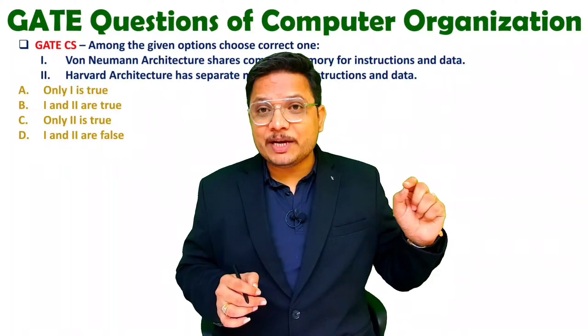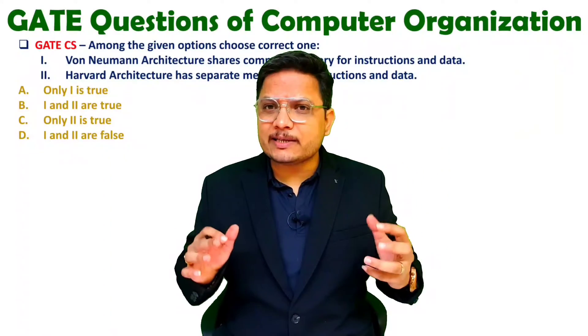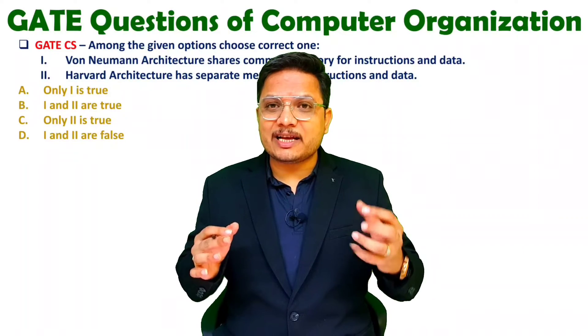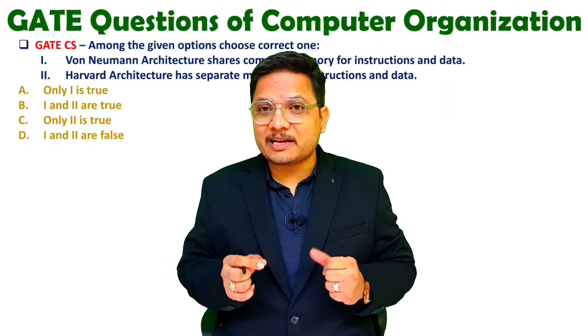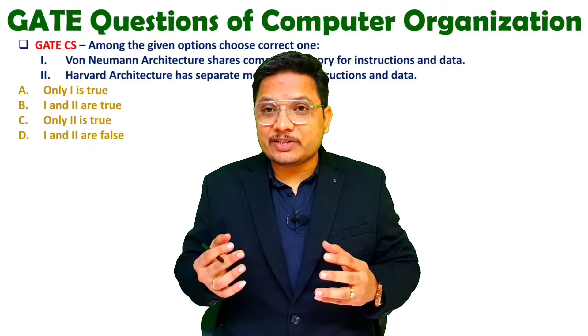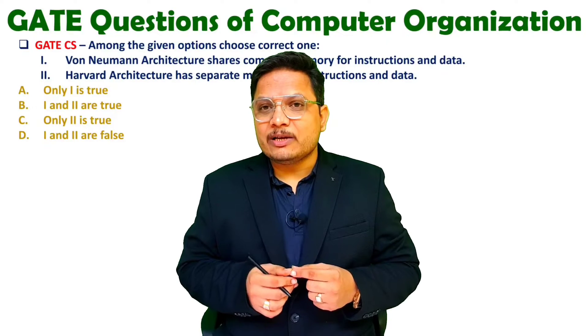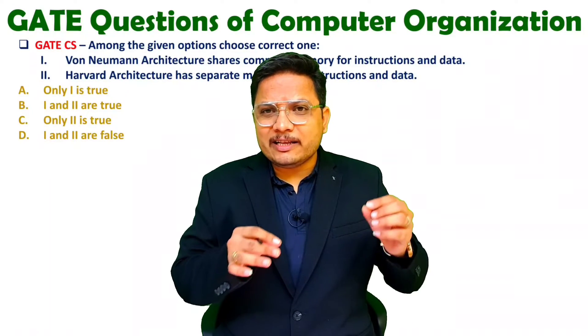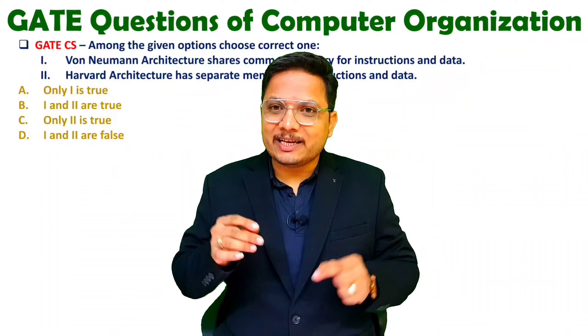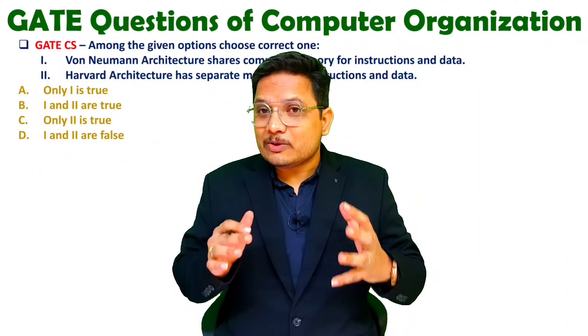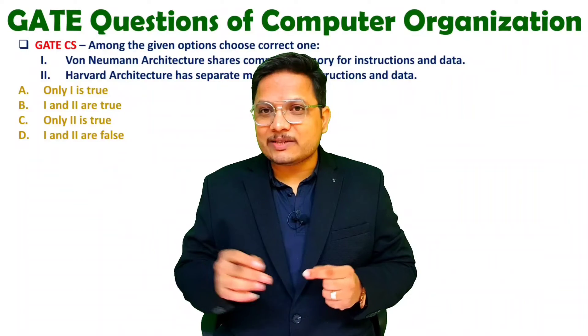In my previous videos I have already explained a few theories based on computer architectures. Like I have explained you how Von Neumann architecture is there, how Harvard architecture is there, based on Flynn's classifications, how we can classify multiprocessor systems. So all those things we have studied in theory. But based on that theory there can be many MCQs. So how to solve those type of questions? Let us see all those things one by one.